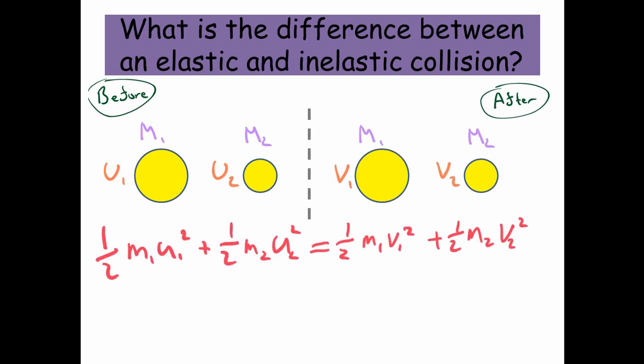So the total kinetic energy to begin with, to work out the kinetic energy of an object, we do half times the mass times the velocity squared. So this is going to be half m1u1 squared plus a half m2u2 squared. So that will tell you the kinetic energy at the beginning, before the collision. And afterwards, we've got half m1v1 squared plus a half m2v2 squared.